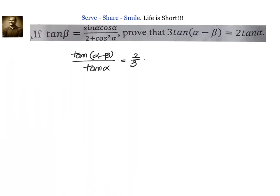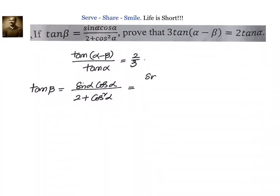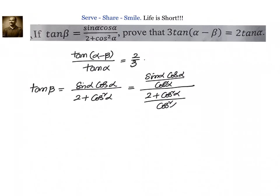Now, what is given to us? Given that tan β equals sin α cos α divided by 2 plus cos squared α. Let us do one thing: divide with cos squared α. Then it will become sin α cos α divided by cos squared α, all divided by 2 plus cos squared α divided by cos squared α. The idea is very simple — to convert into tan. So this will become sin α by cos α, which is tan α.